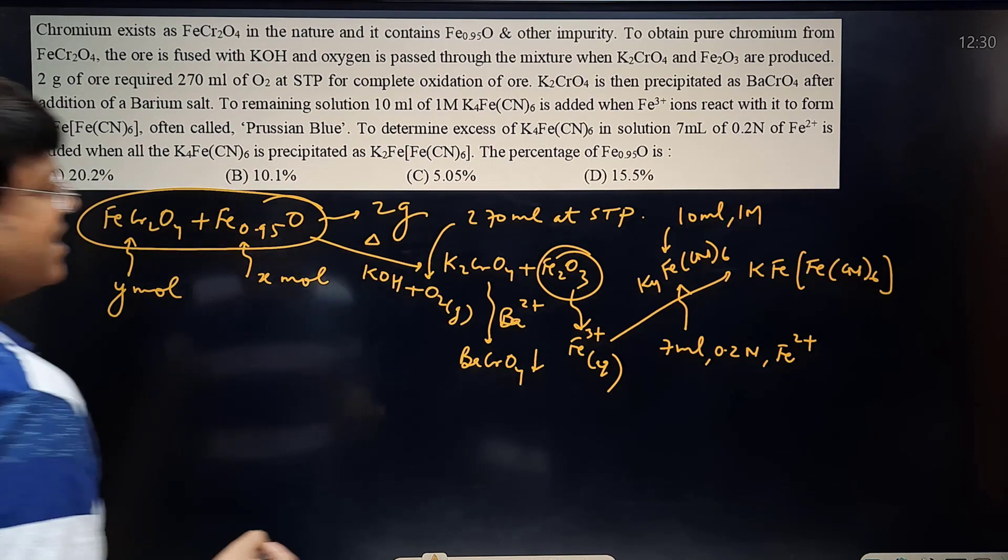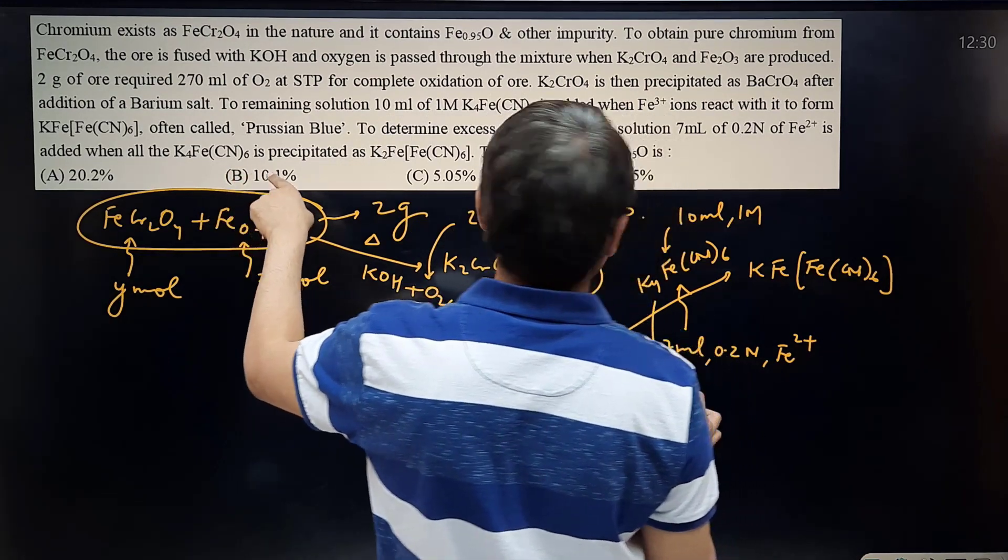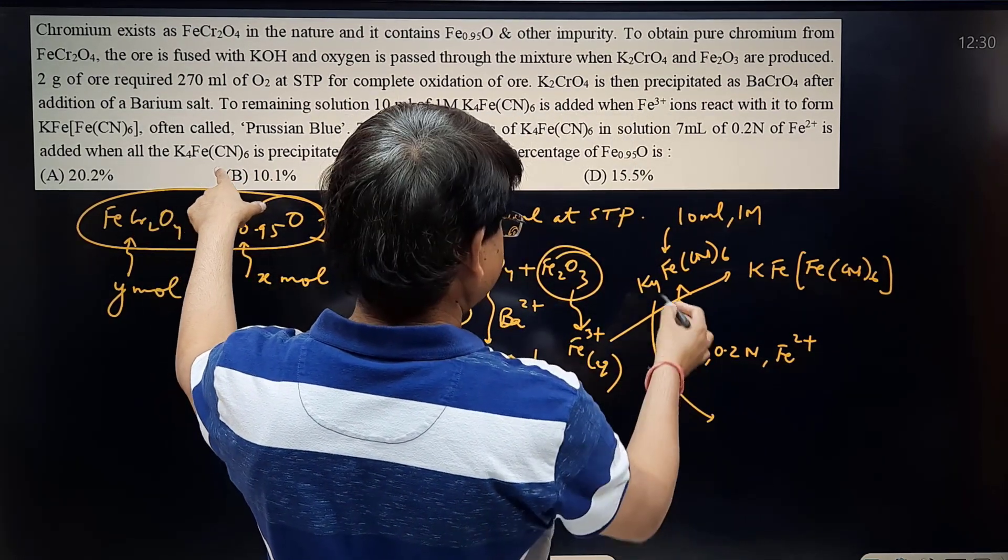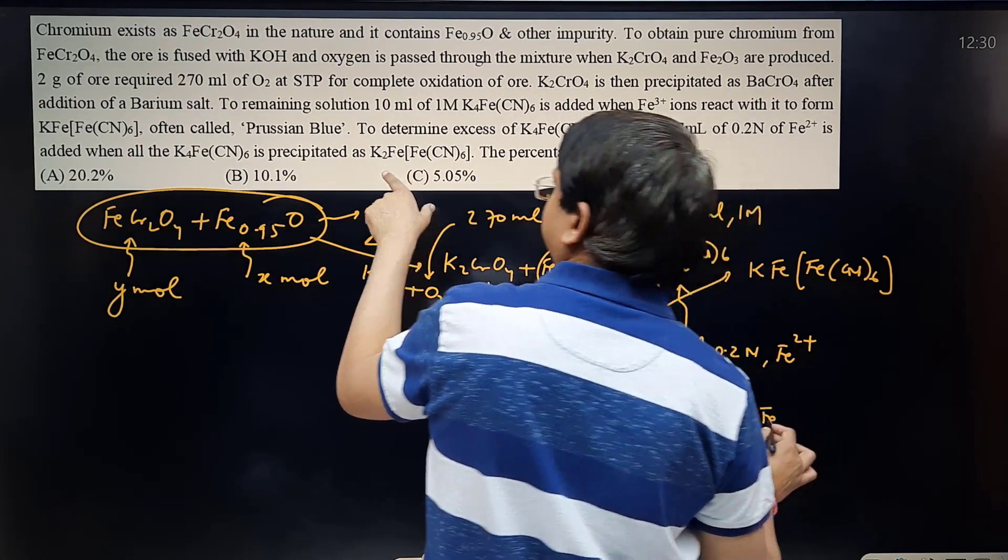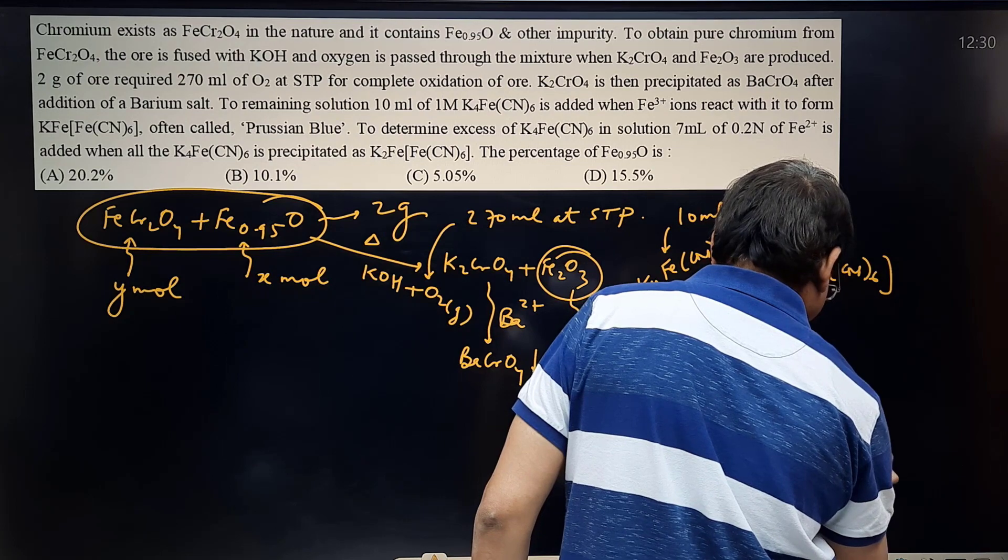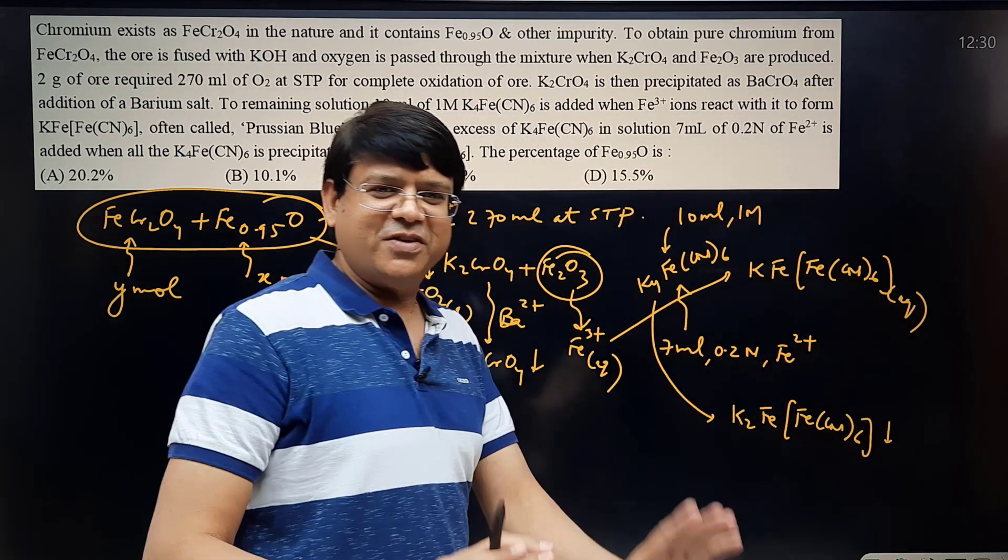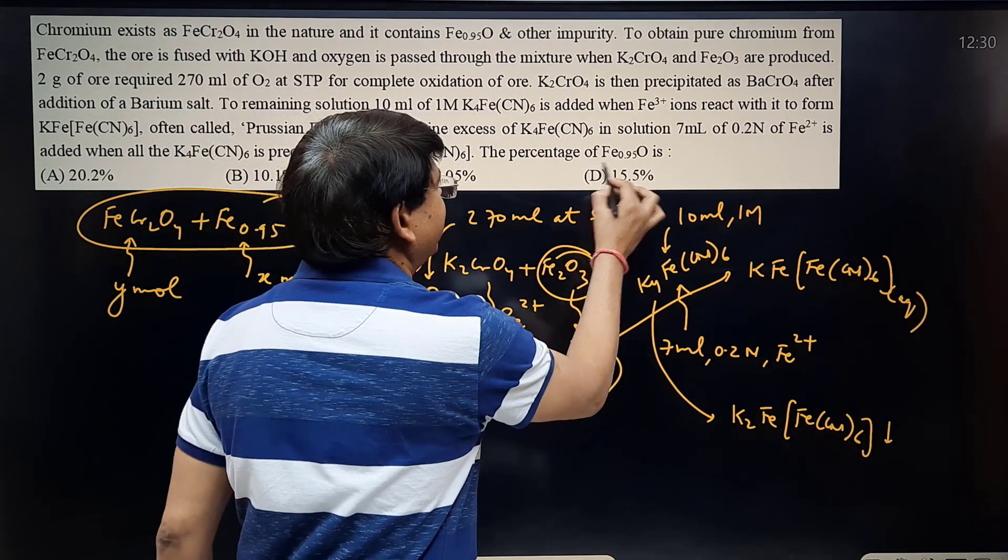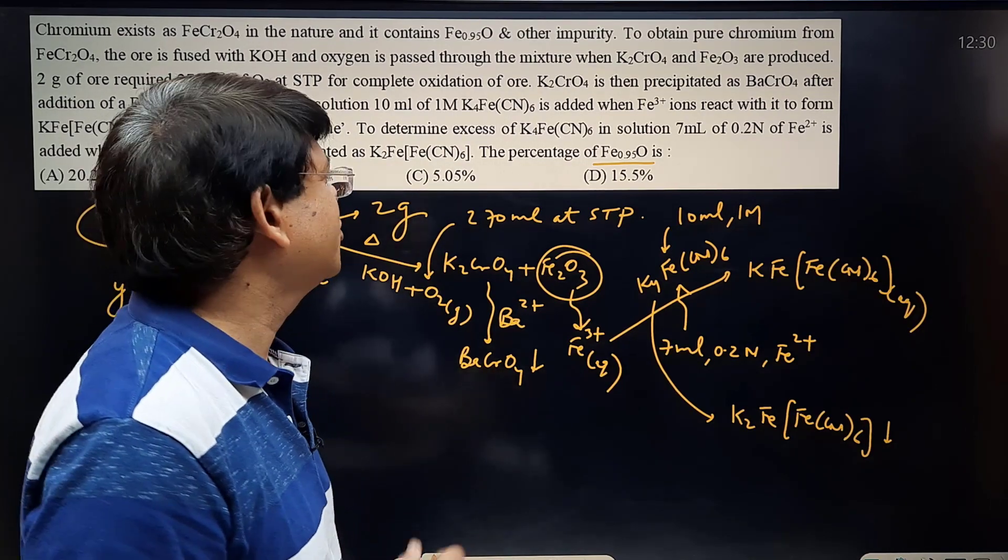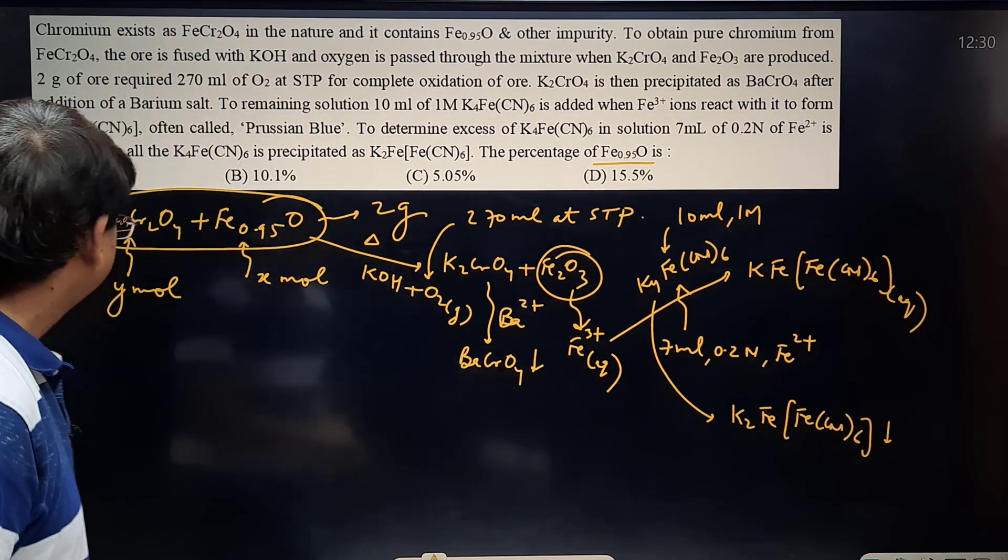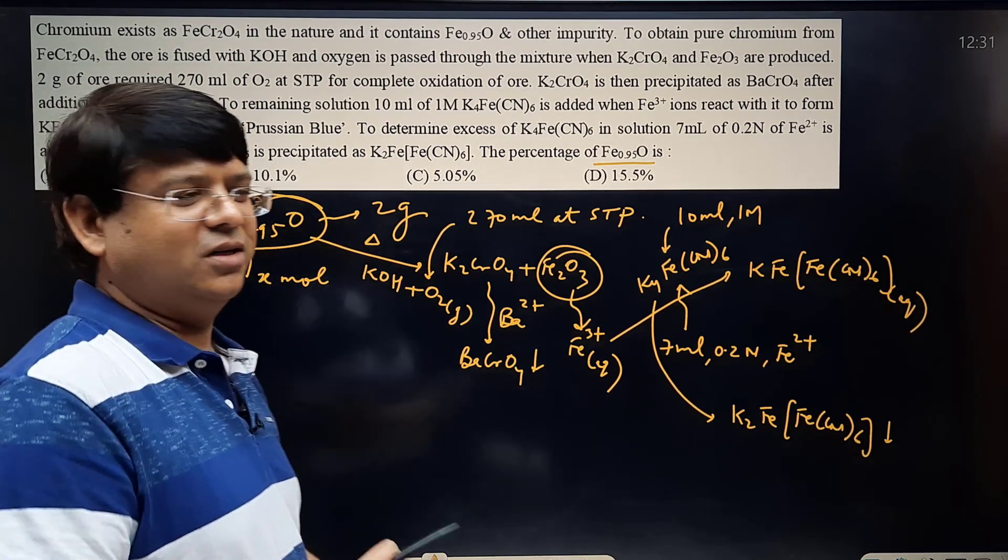Finally, the question is saying that when all the K4FeCN6 has been precipitated as K2FeFeCN6, this is a precipitate and this was aqueous. This is what the question is all about. They are asking what will be the percentage of Fe0.95O. Of course, percentage by mass we have to find out. If we get the value of X and Y or simply X, then the question will be solved.